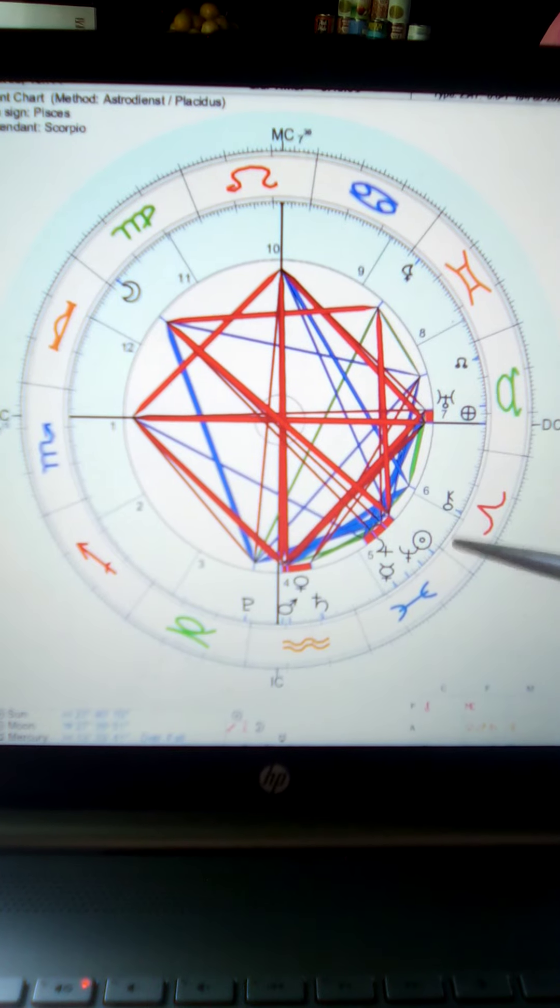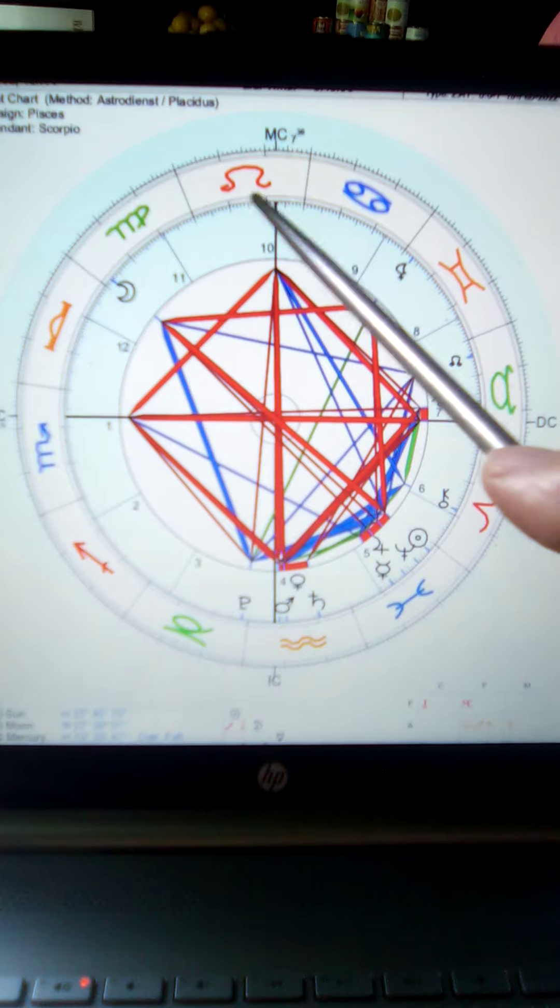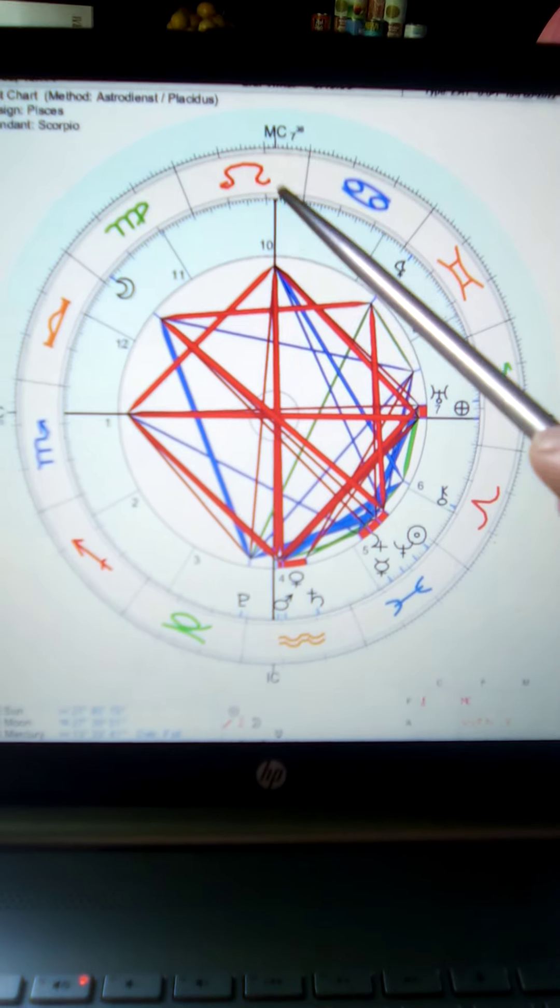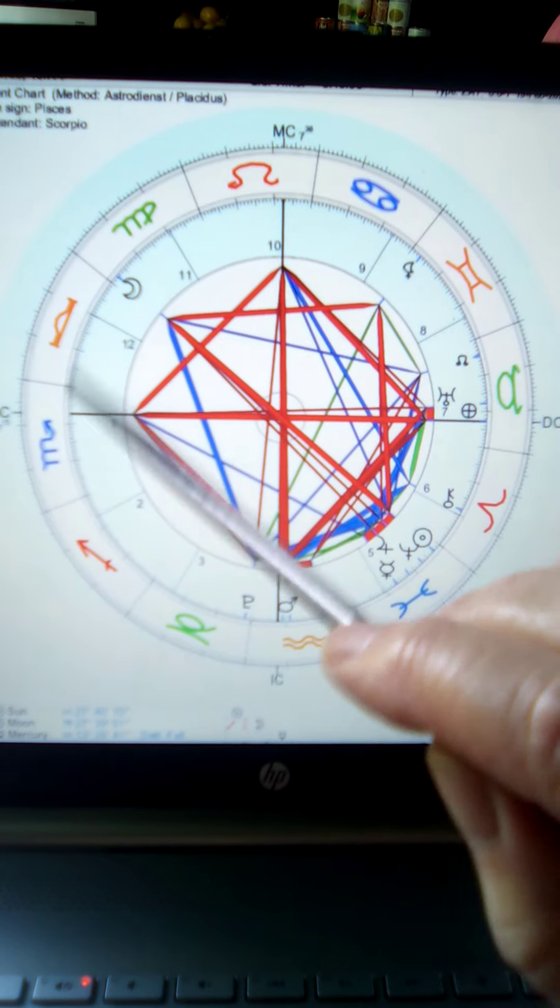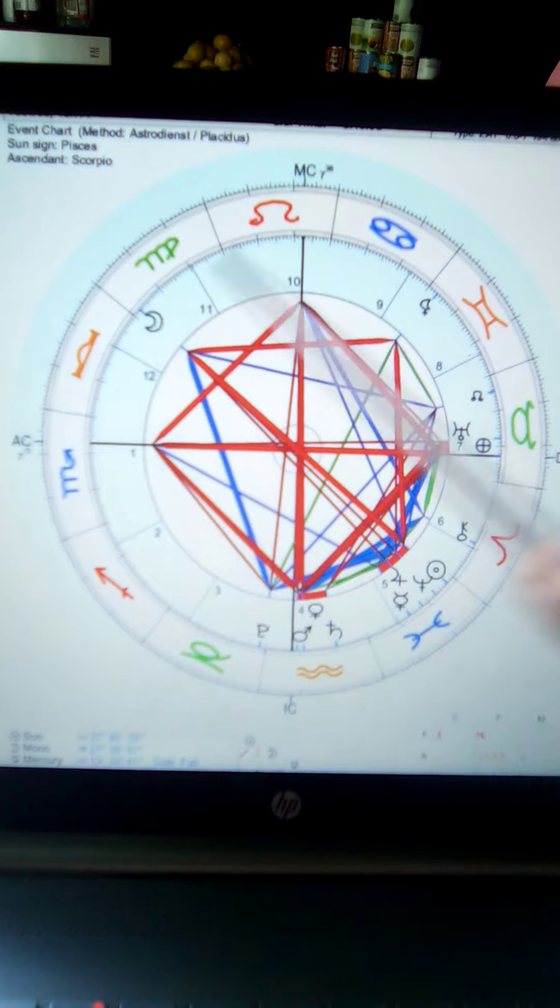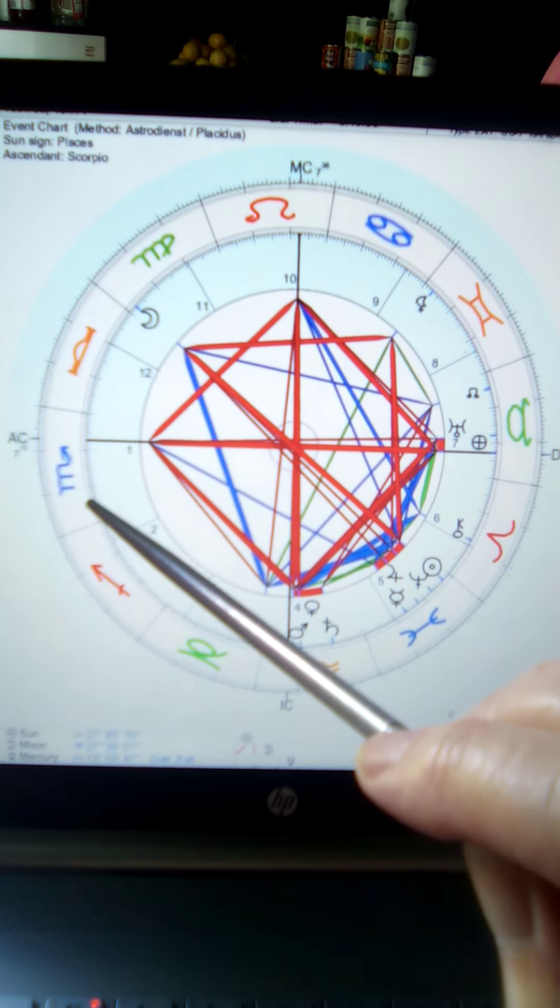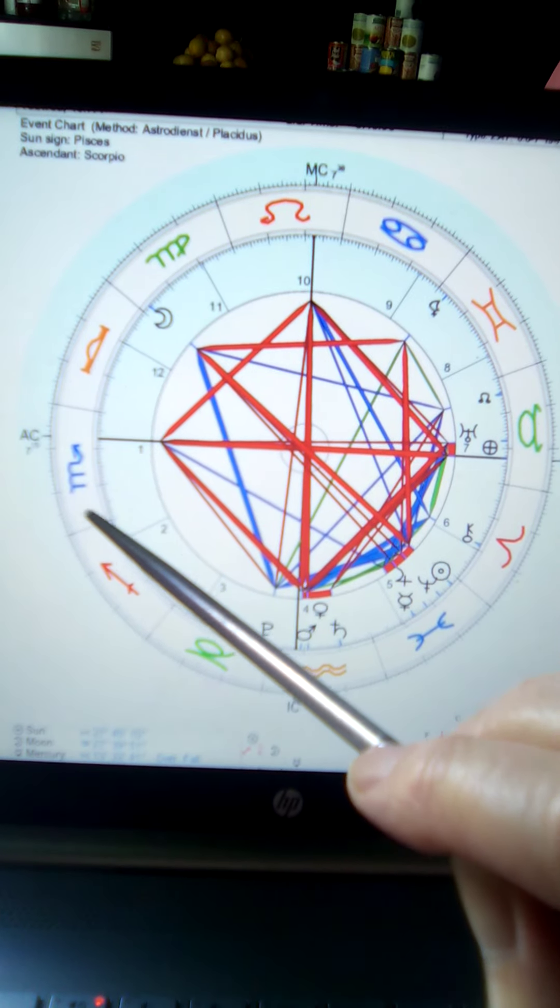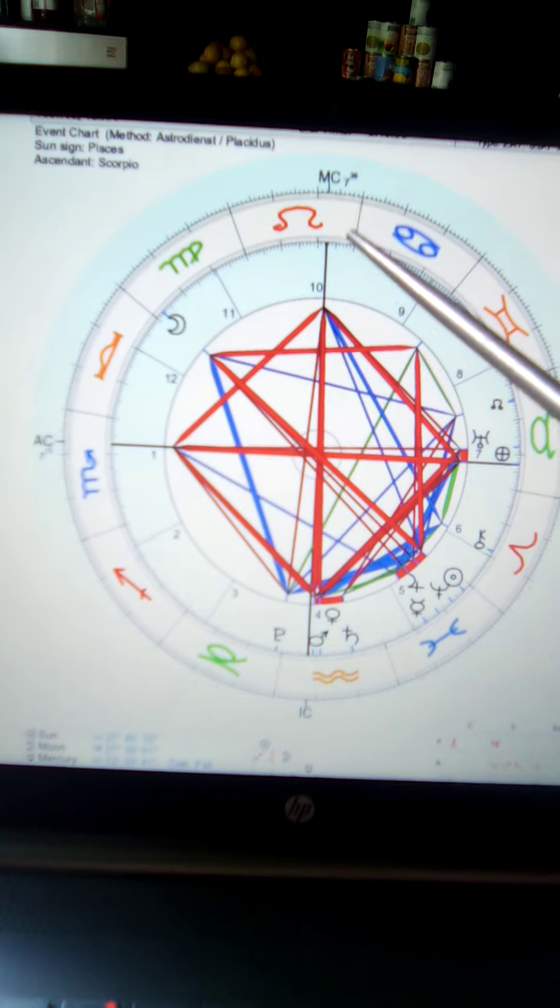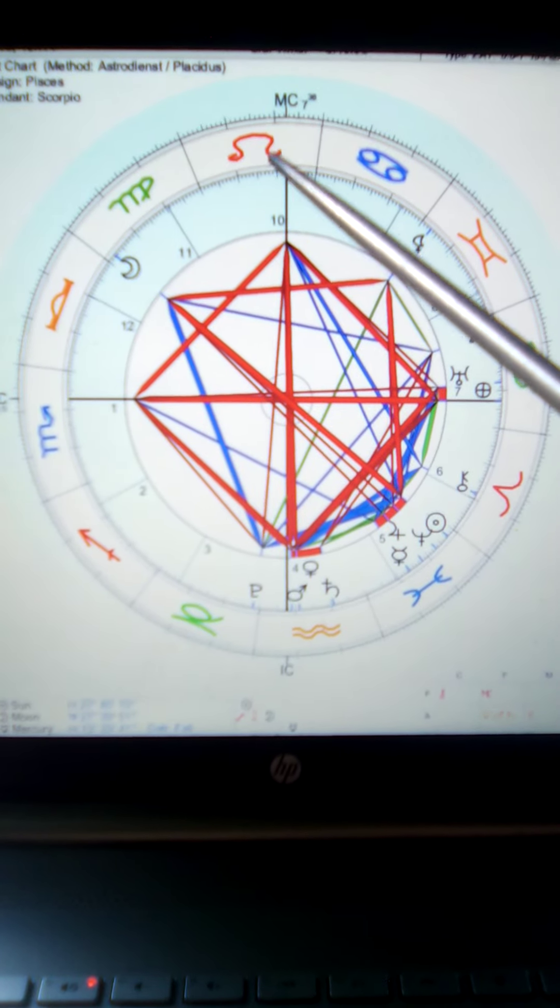But now Leo, there is the second place where all the four element signs are repeating again. From Leo to Scorpio, the element is in service of the ego. Here we can show our beautiful egos.